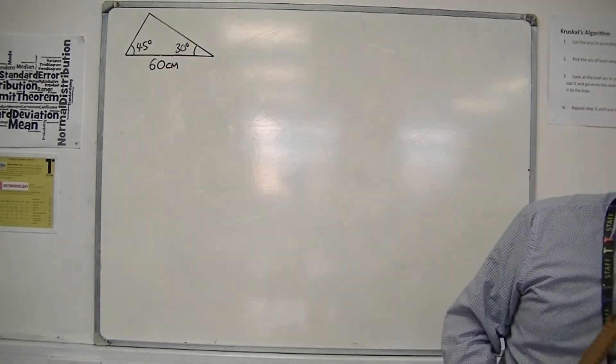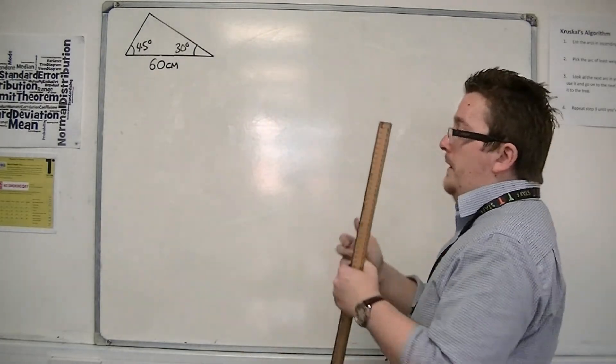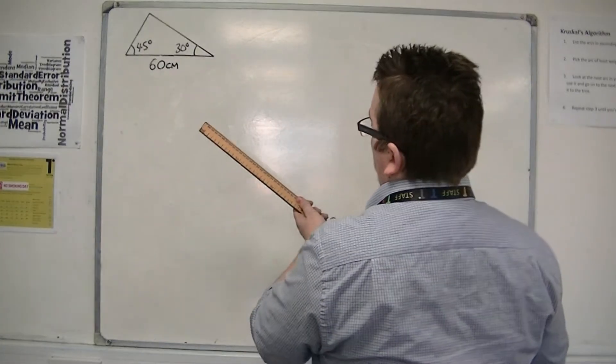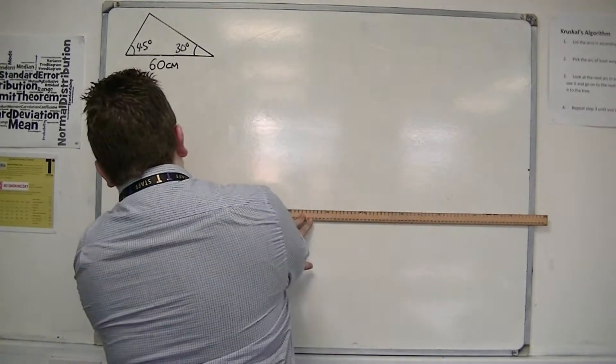The first thing to do is draw the one thing that we can draw first, and that is the baseline. 60 centimeters. We draw a 60 centimeter line horizontally.